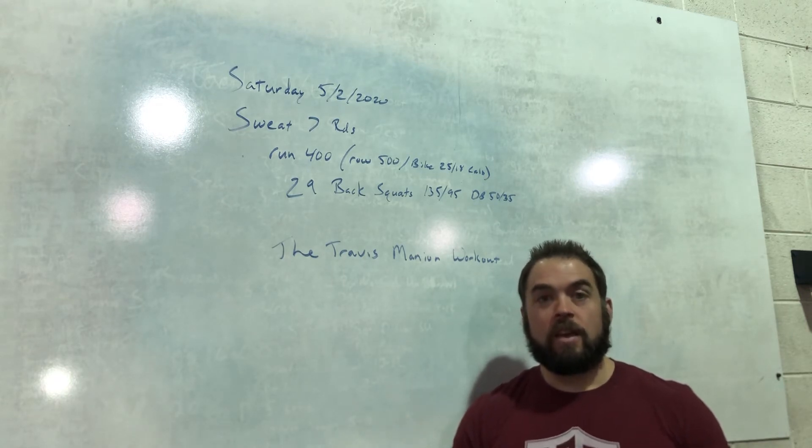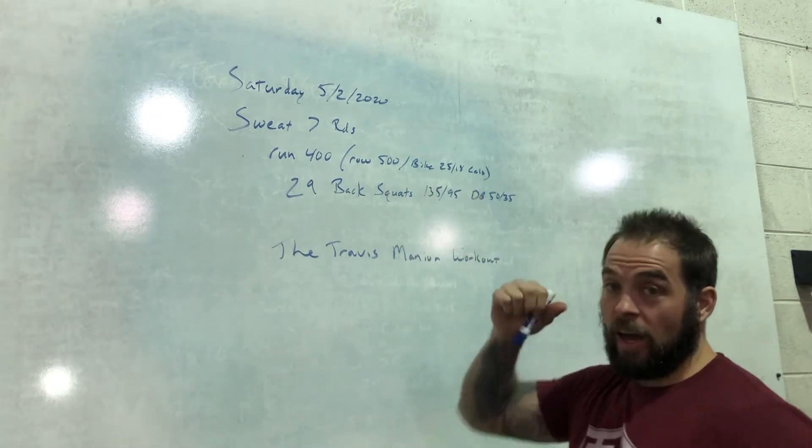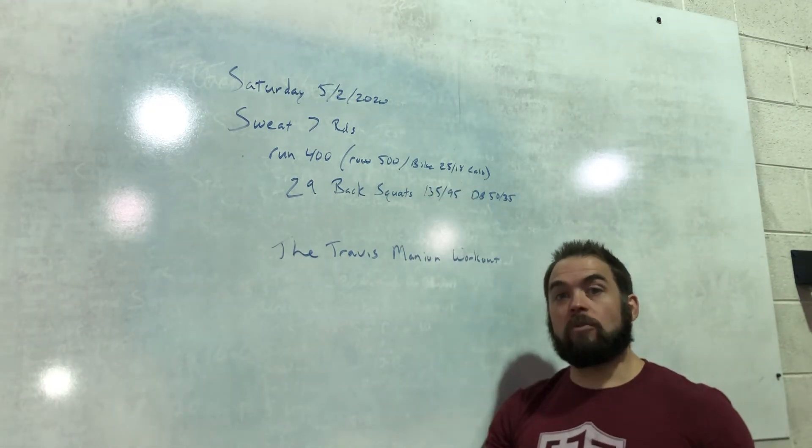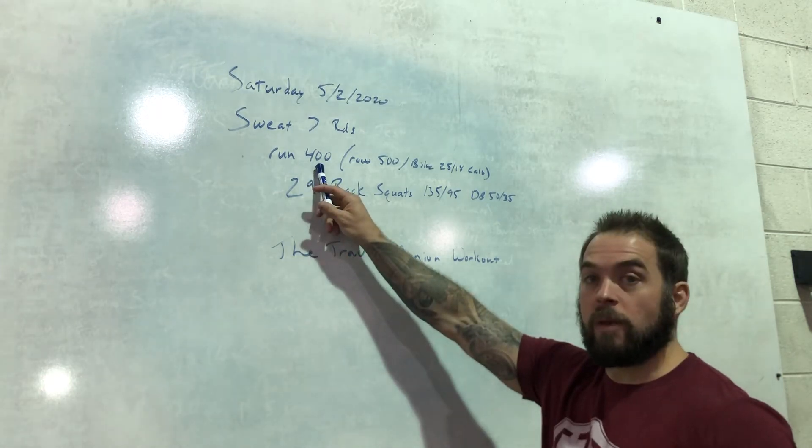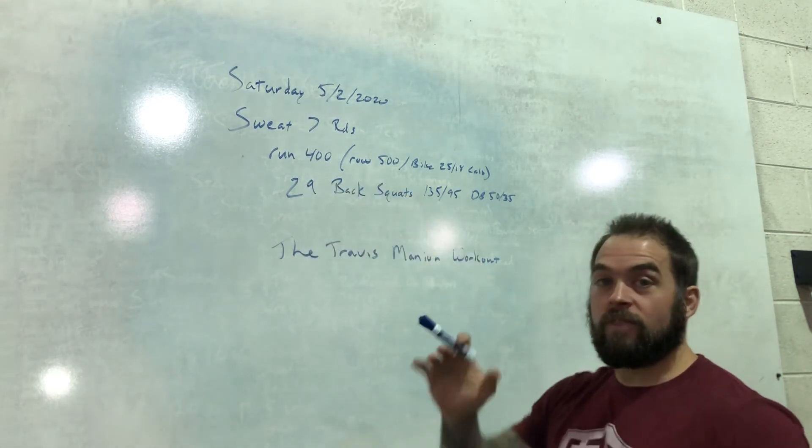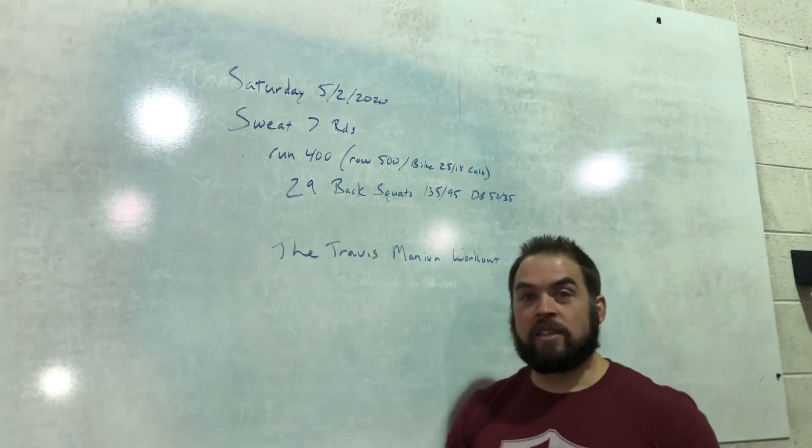Okay, if you don't have a space to run we're gonna do rowing and bike options. So seven rounds for time of running 400 meters, row 500 meters, or assault bike 25 or 18 calories for ladies.